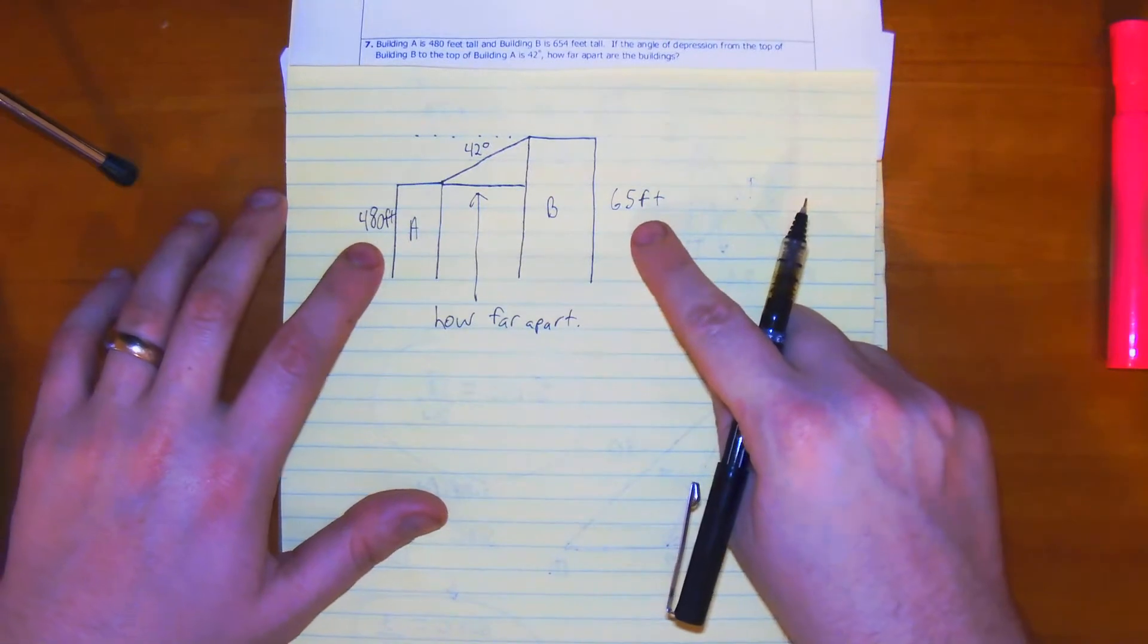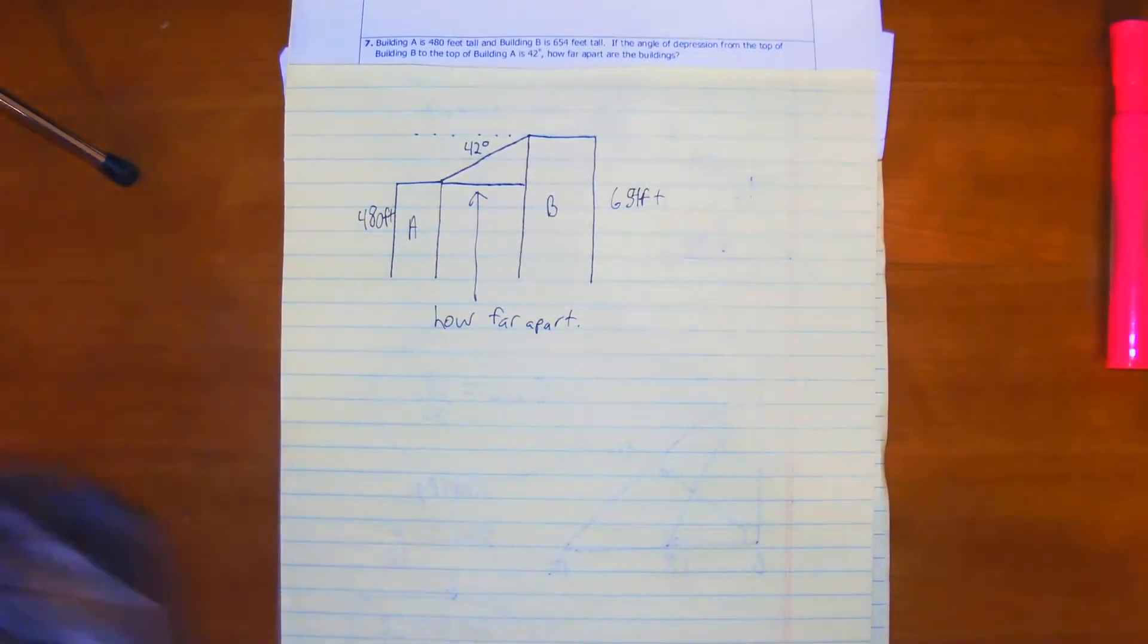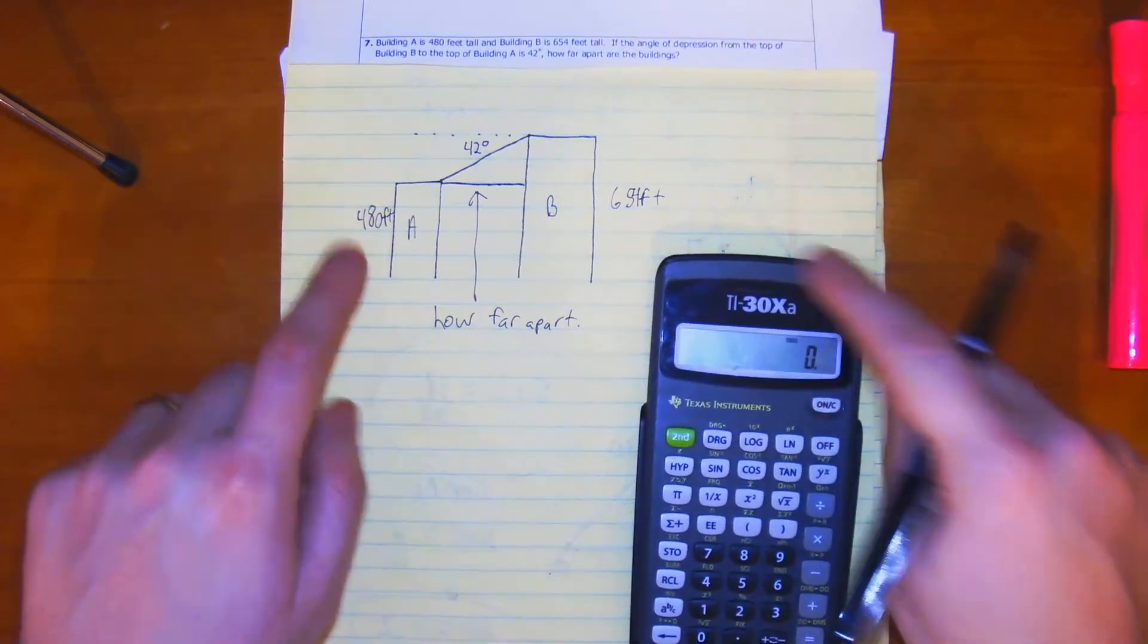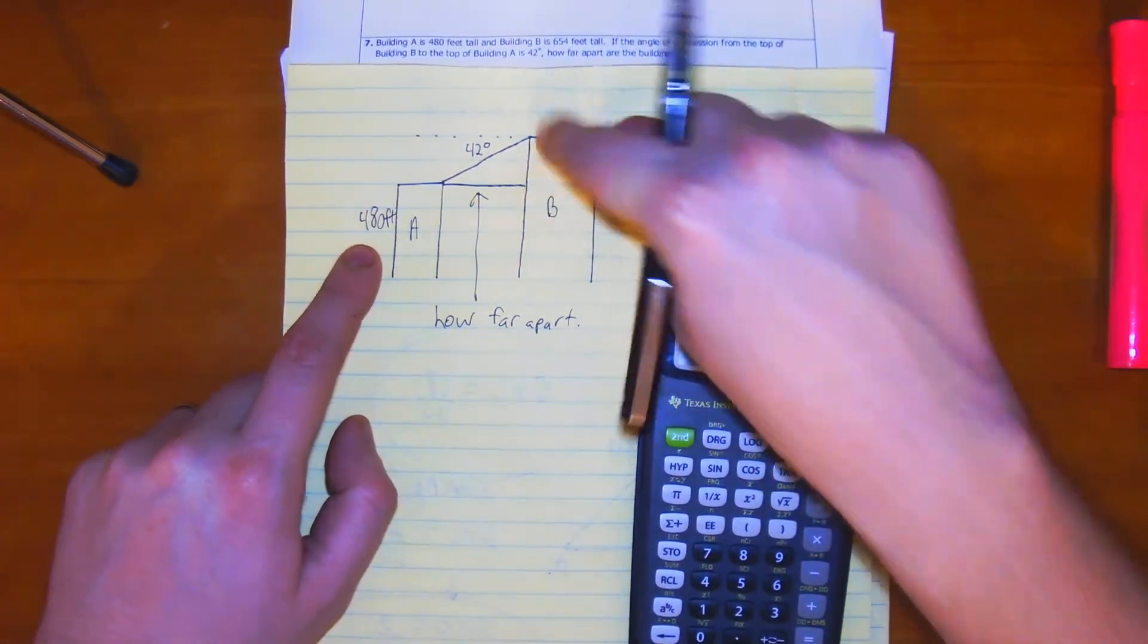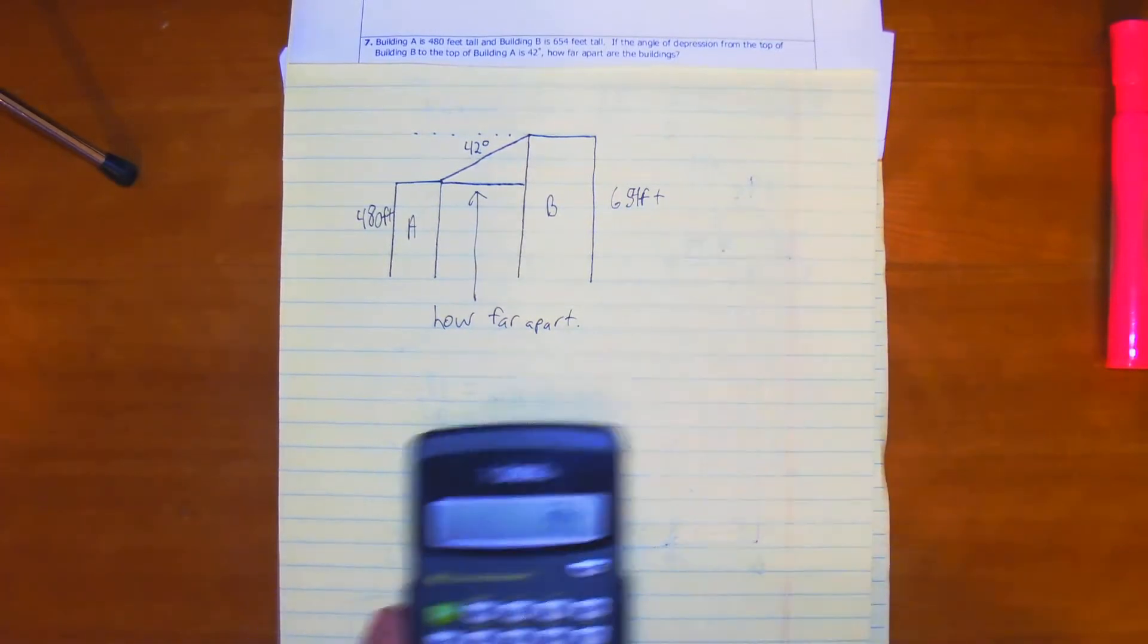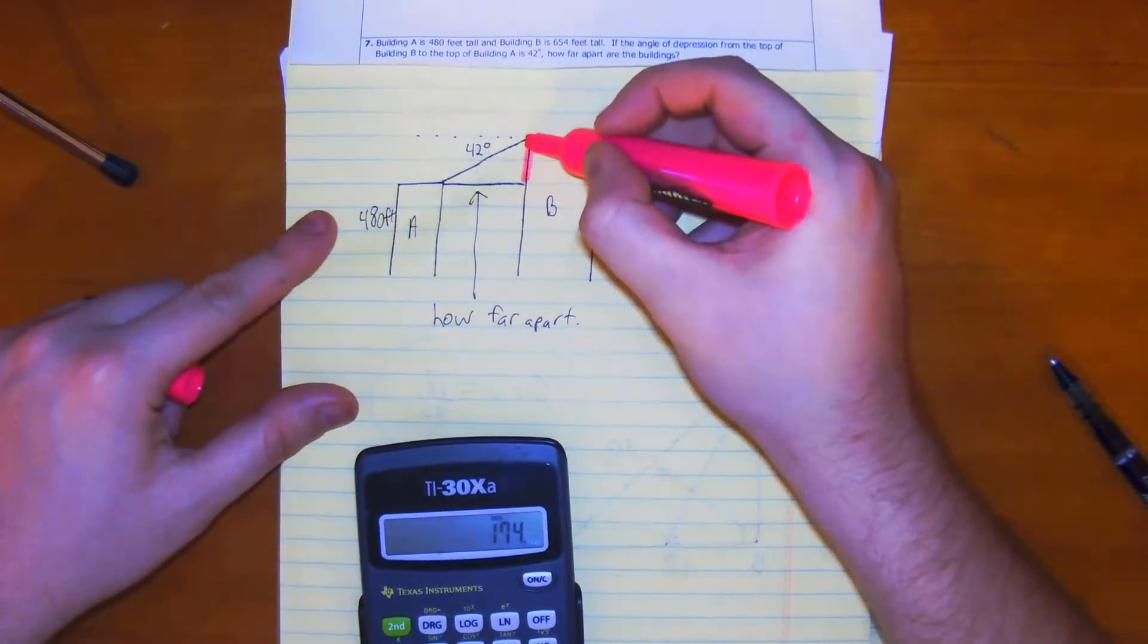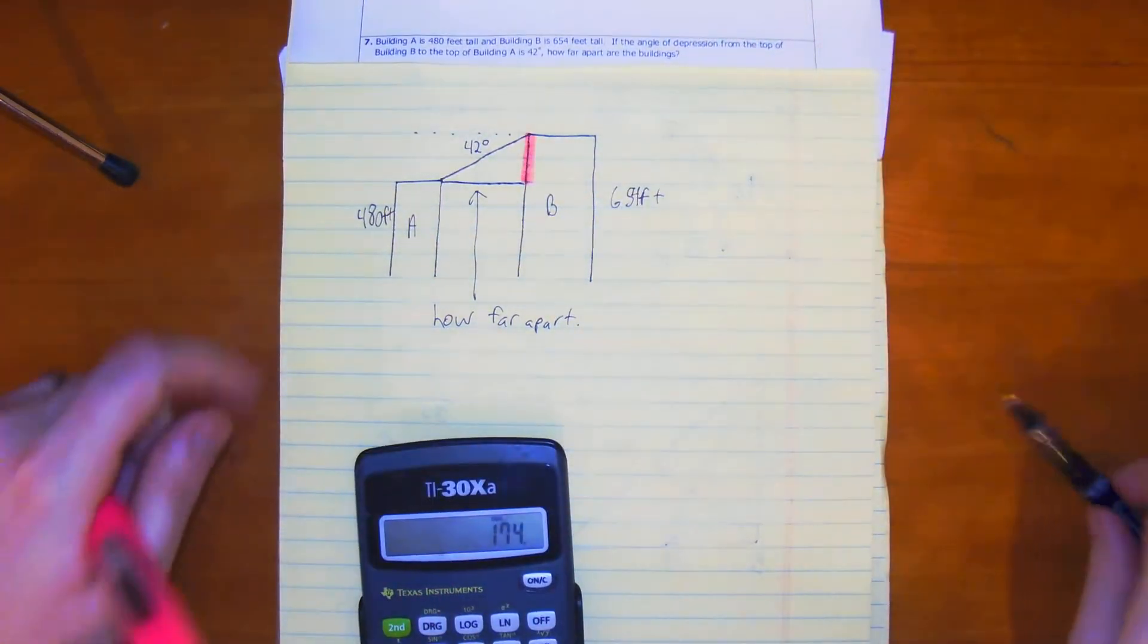If that's 480 and that's 654, we just have to find the difference to see how tall this section is. So 654 minus 480 gives us that this section right here is going to be 174 feet.